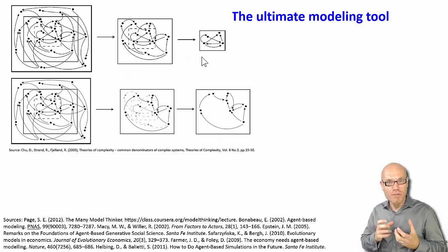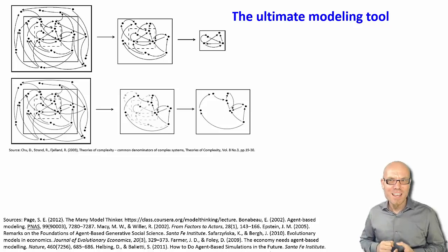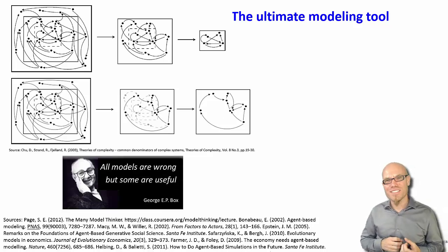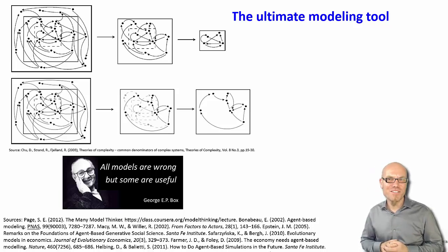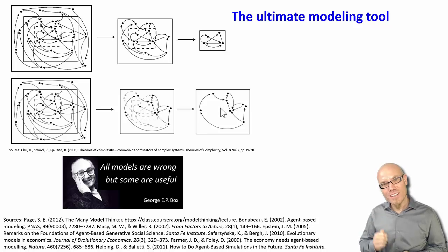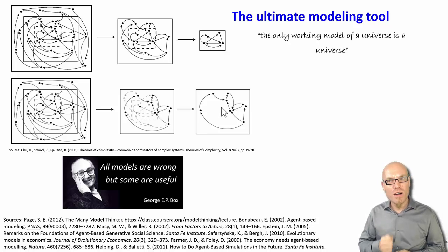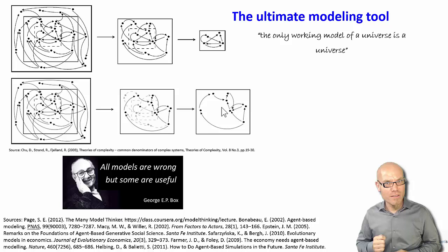but obviously they have very different predictions that explain this reality from very different perspectives. So that's why people actually often say that all models are wrong, as George Box said, but some models are useful. So all models are wrong. This here is wrong, and this here is wrong, but some of them are actually useful to understand. But that doesn't change the fact that the only working model of the universe is a universe, a one to one map.